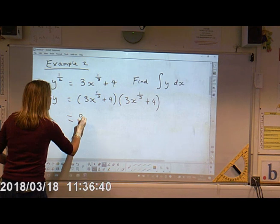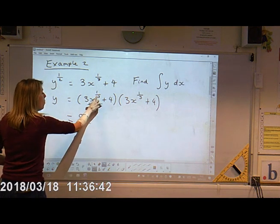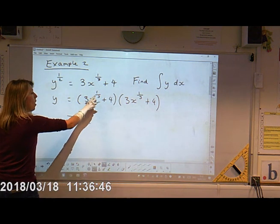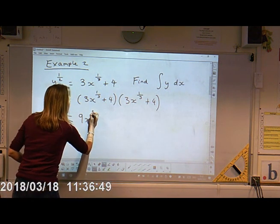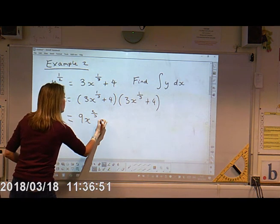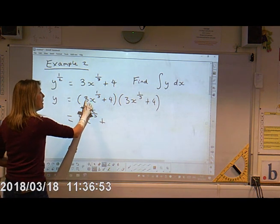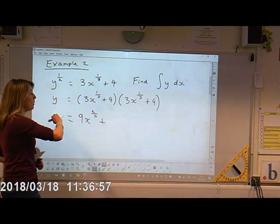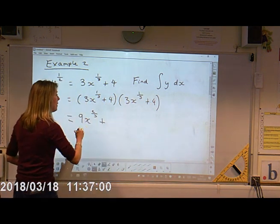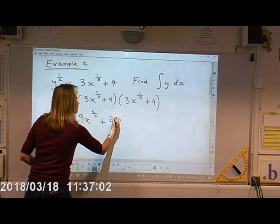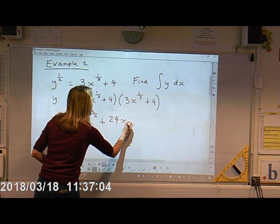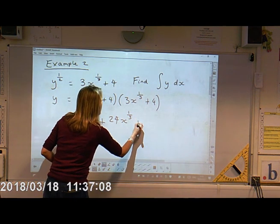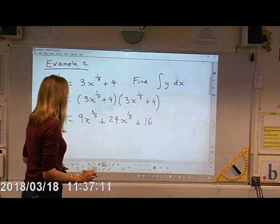Three times three is nine. Because we are multiplying these X terms here, I'm going to do a third plus a third is two thirds, plus three X to the power of a third times four is going to be 12 X to the power of a third. I've got two of them here because I'm going to multiply this as well. So that's going to give me 24 X to the power of a third plus four times four is 16.